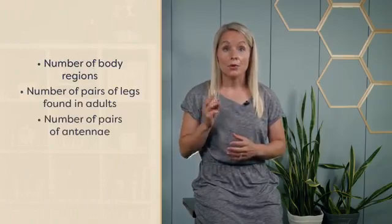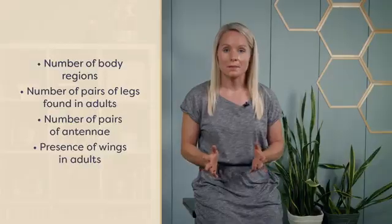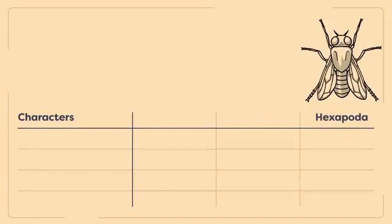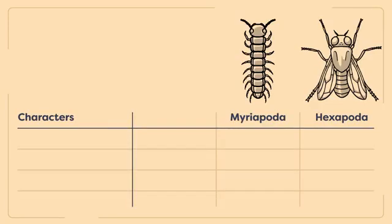Most of this course will focus specifically on insects. Let's begin by learning what insects are and how we can differentiate them from other hexapods and more distantly related terrestrial arthropods, such as spiders and millipedes. The easiest way to tell an insect from any other arthropod is to look at four main characteristics in an adult specimen: the number of body regions, the number of legs, the number of antennae, and the presence of wings. Let's compare these characteristics among insects, non-insect hexapods, myriapods, and the terrestrial chelicerates — arachnids.